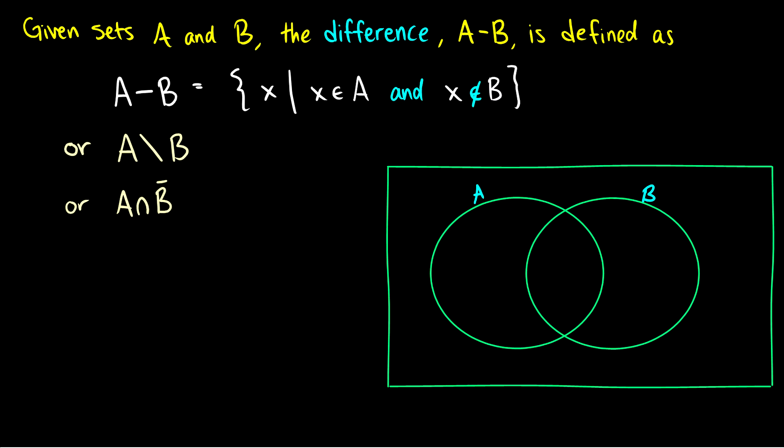So if I have 1, 2, and 3 in A and 3, 4, and 5 in B, if I want A minus B, I want everything in A but I don't want anything in B so I remove all of B.